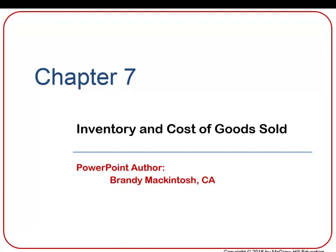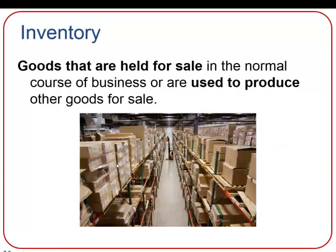Welcome back. Our next chapter is Chapter 7, Inventory and Cost of Goods Sold. Inventory is held by all kinds of businesses for immediate sale or to be used to produce something else. Keep in mind that it's going to be something that's ultimately sold to somebody else. So inventory is different from something like supplies, which is used in the course of business but not sold to someone else.